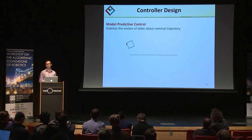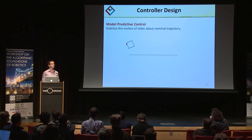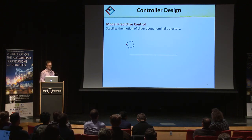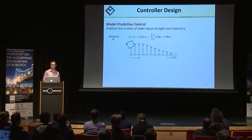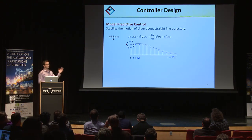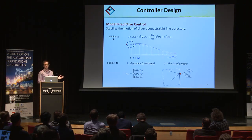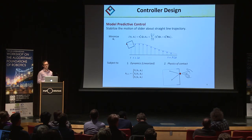Our controller design presented in this paper is based on model predictive control, where the goal is to stabilize the motion of the object about a nominal trajectory. At each instant in time, you define an optimization program where the objective is to find a sequence of velocities that minimize some notion of error between the slider and the nominal trajectory over a finite horizon. We subject the search to the dynamics of the system linearized about the desired trajectory, and the physics of contact — specifically, the friction cone constraints.